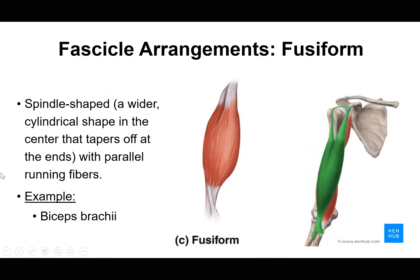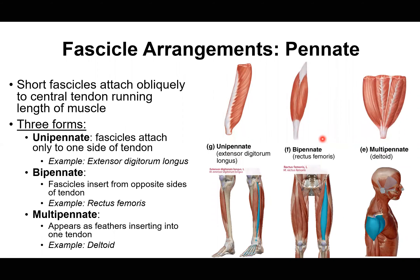Fusiform fascicles are arranged in a spindle shape — wider and more cylindrical in the center, tapering off at the ends, with fibers running parallel to that tapering. The example given here is the biceps muscle, which has this thicker cylindrical center that tapers off at the ends.